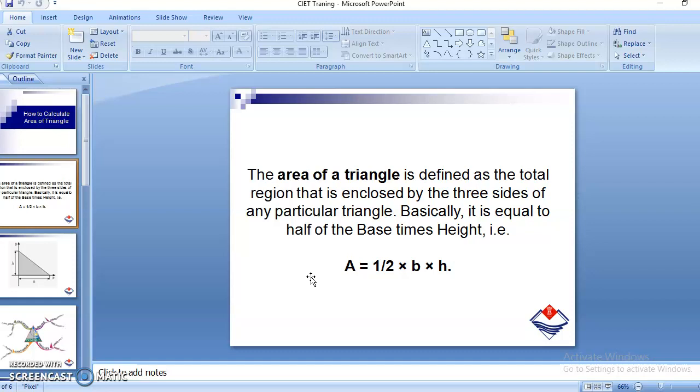The area of a triangle is defined as the total region that is enclosed by the three sides of any particular triangle, or we can say the three sides of a particular polygon. Basically, it is equal to half of the base times height.